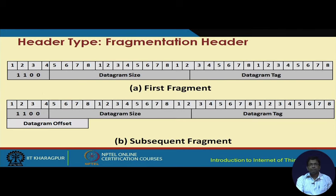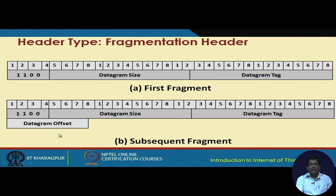The third header type is the fragmentation header. The first fragment has one structure and subsequent fragments have a different structure. The main difference between the first fragment and subsequent fragments is the inclusion of the datagram offset. The datagram offset indicates the position of subsequent frames relative to the first frame, helping reassemble the complete datagram.